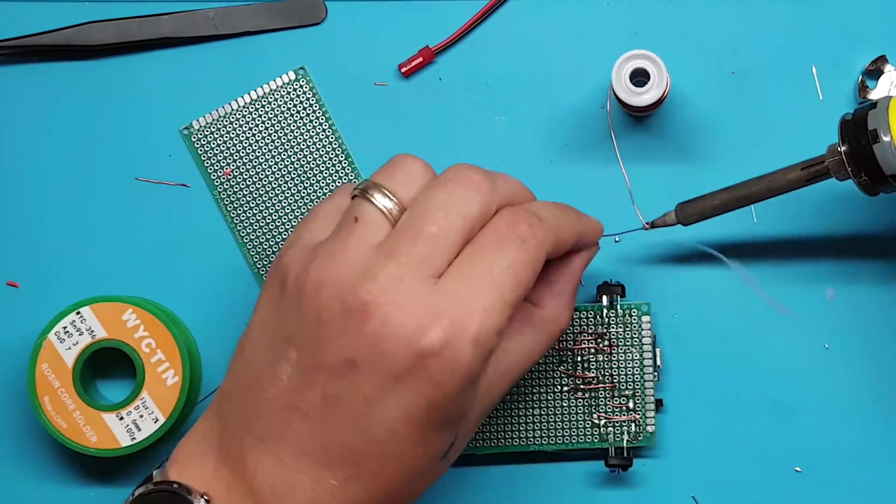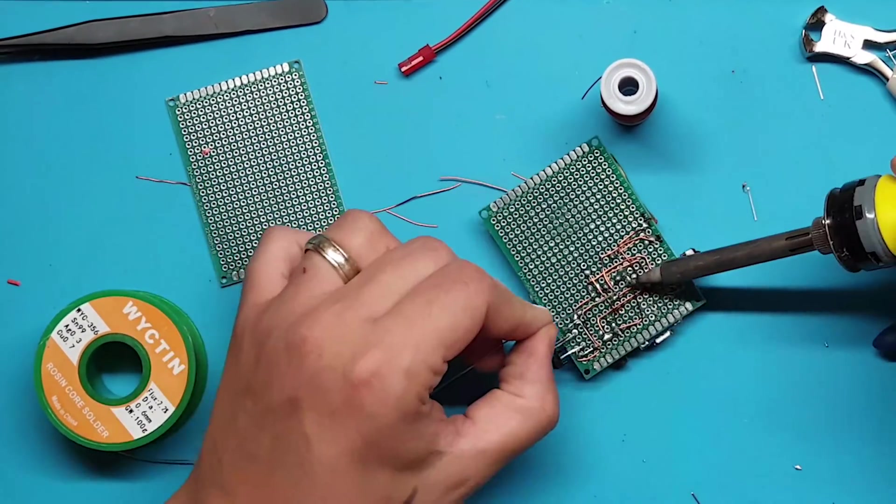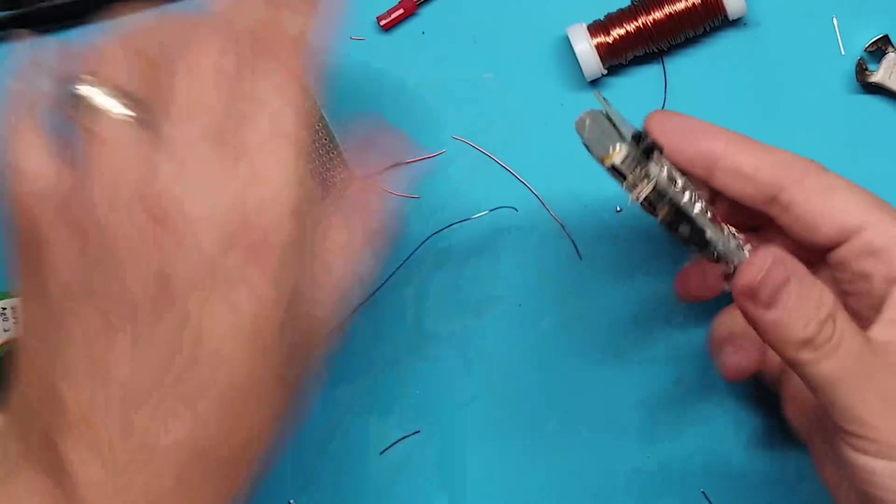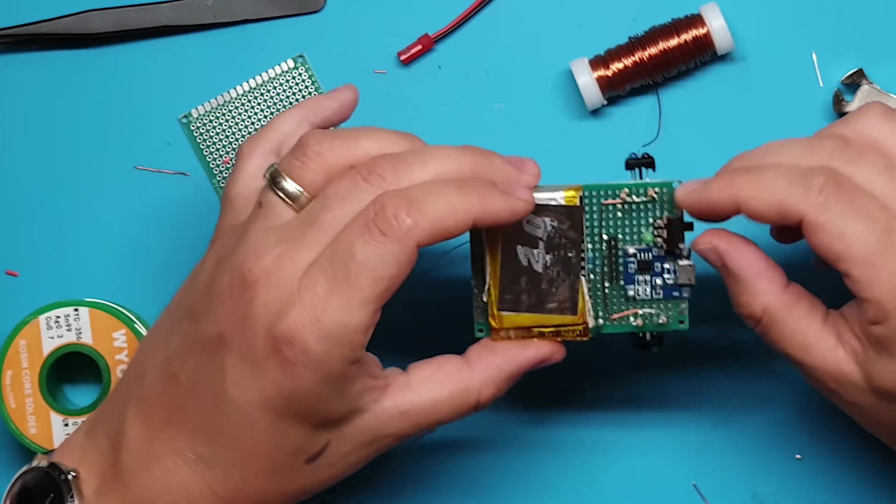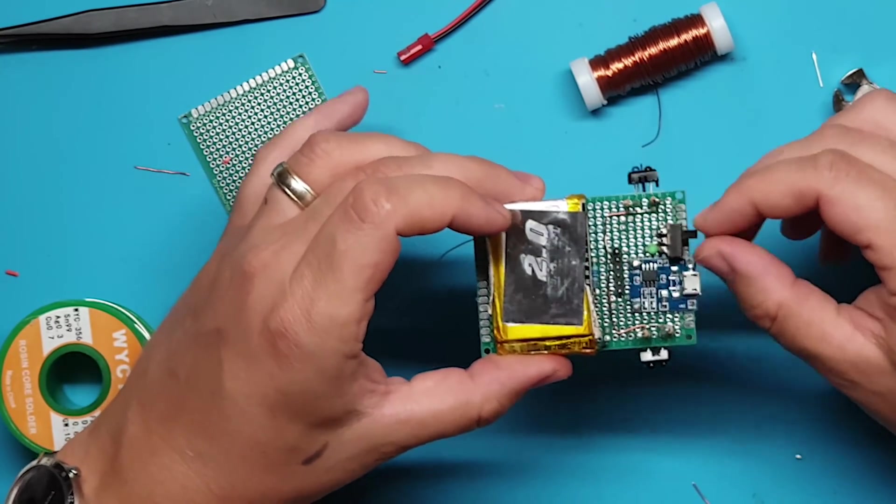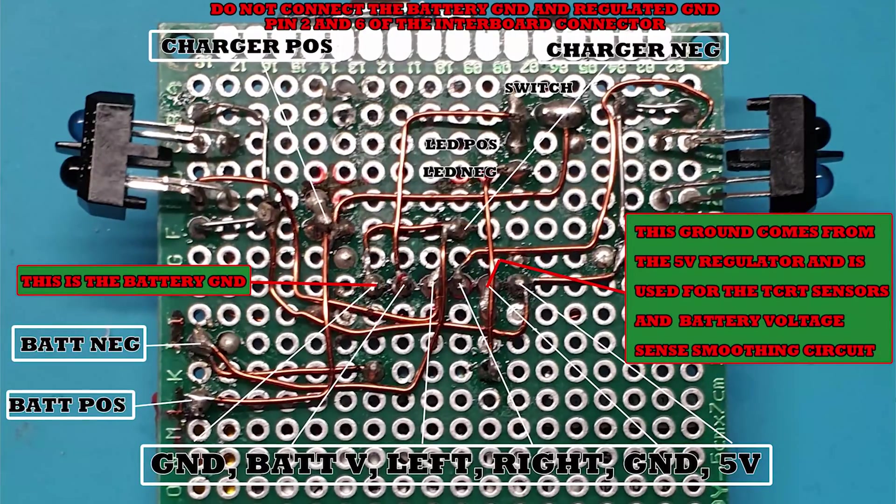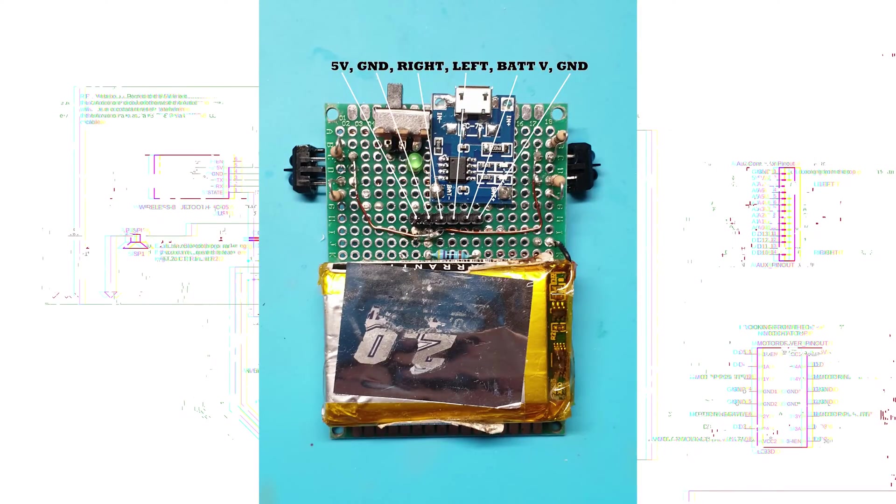To finish off the board, I will add the other side of the power switch to the battery voltage switch pin of the inter-board connector. Here you can see how the board is connected. I have labeled various parts to make it clear. Ensure that your board matches mine. That's the bottom board completed, now it's time to build the top board.